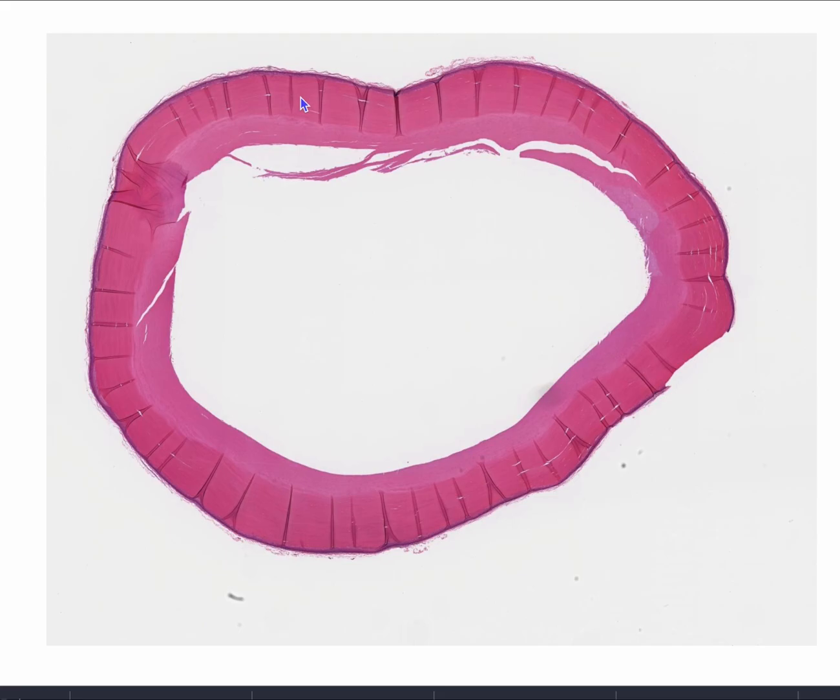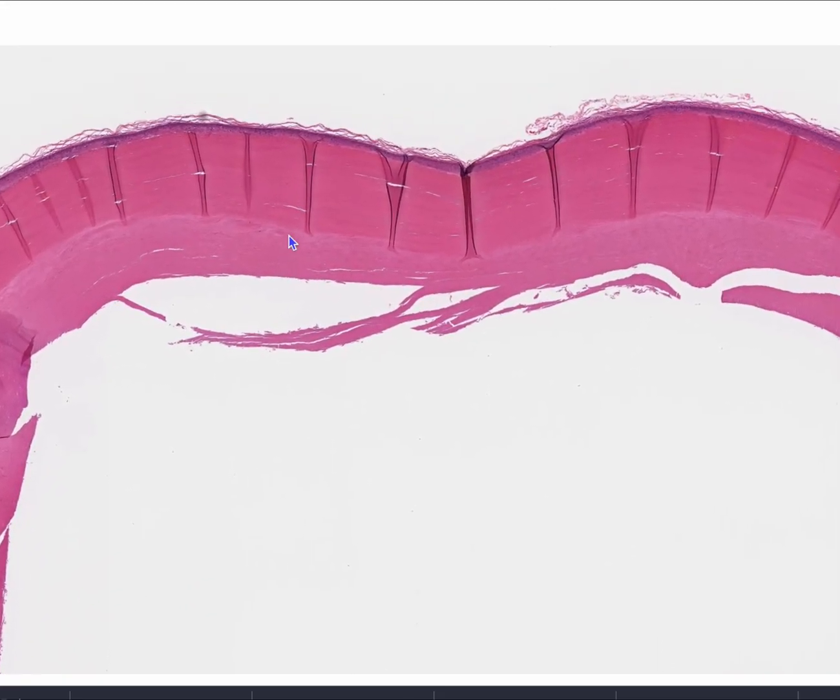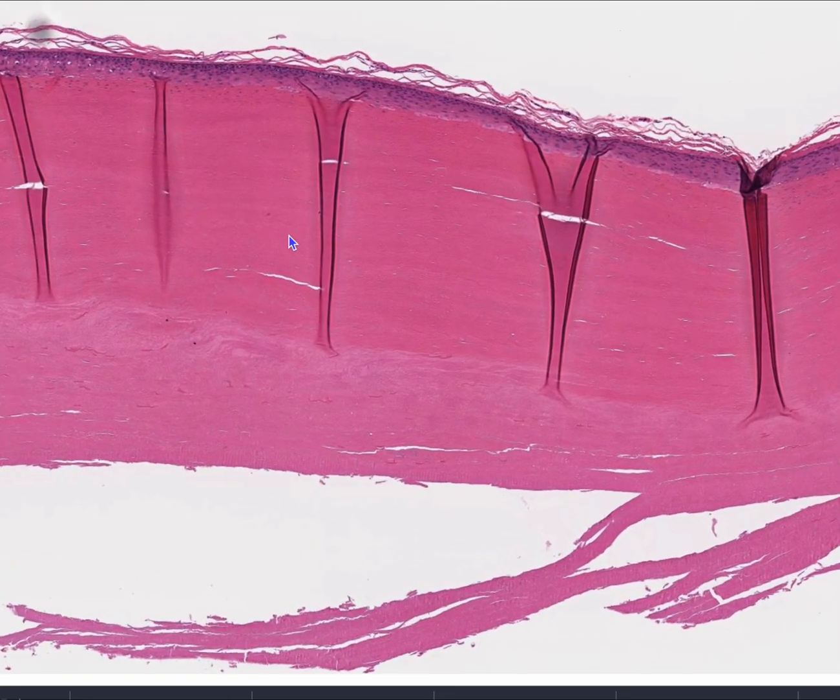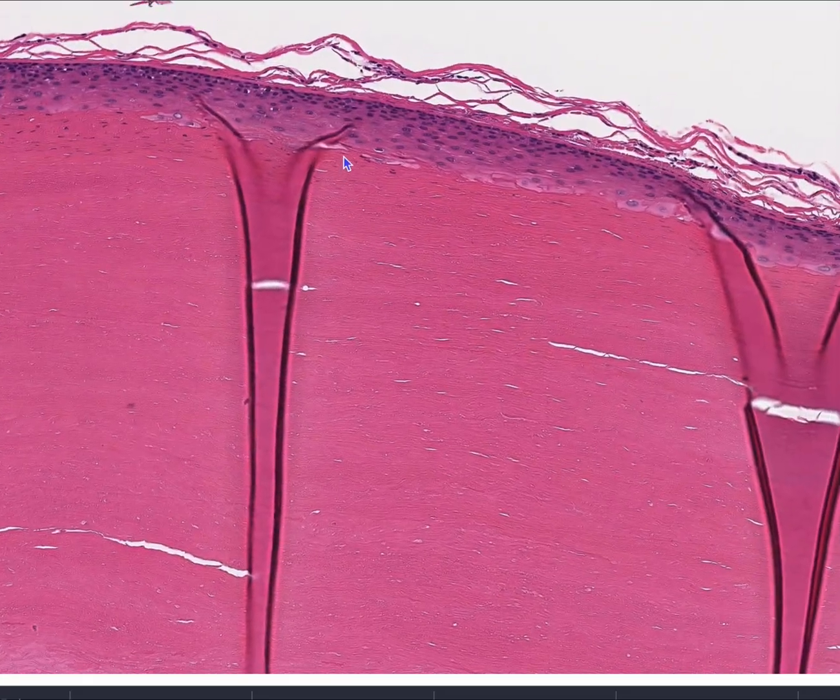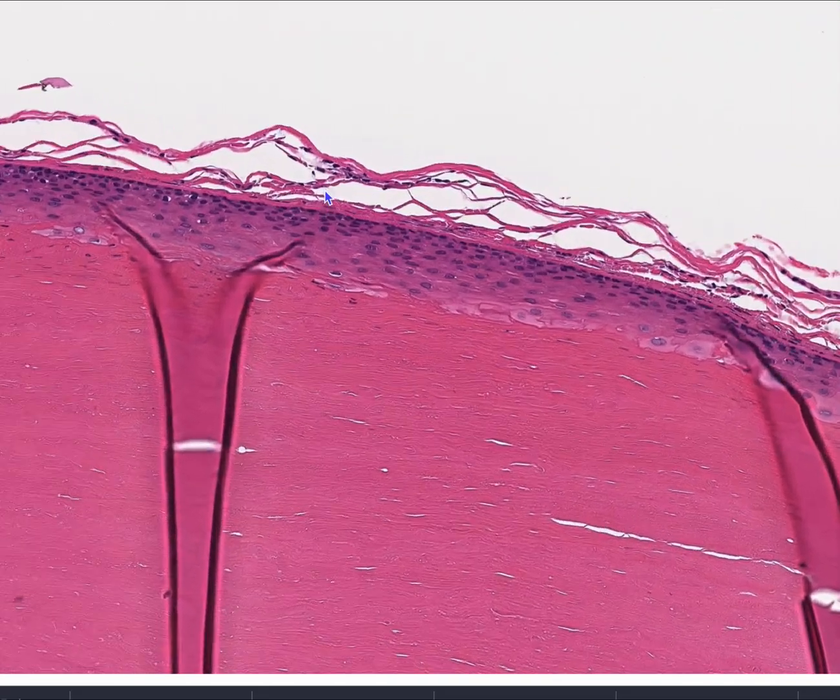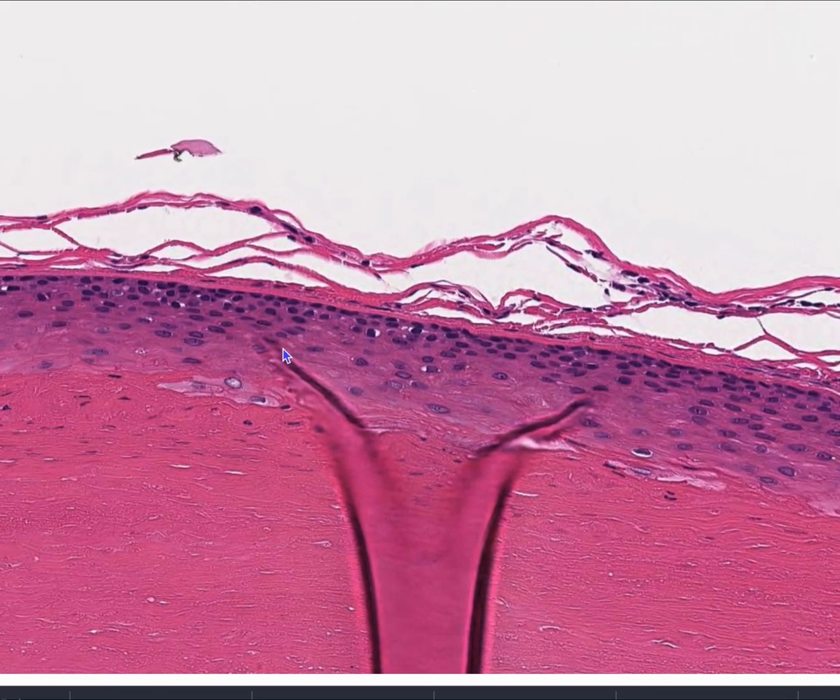So these generally grow on the scalp and they have a very thick keratin, very compact. And as you look in the outer layer, there's going to be a lack of a granular cell layer.